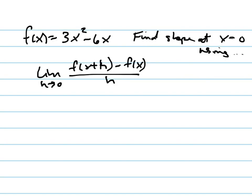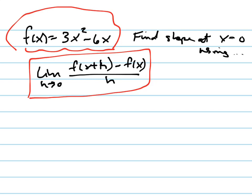So we're going to find the slope at x equals 0 of f of x equals that. We're finding the slope of this at x equals 0, and we're using this formula. So let's take a look at the big picture.